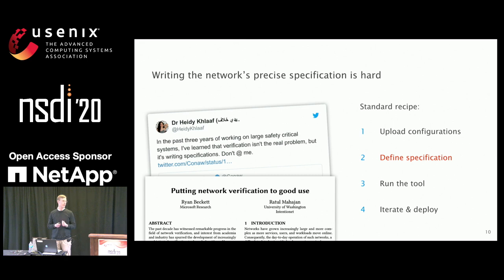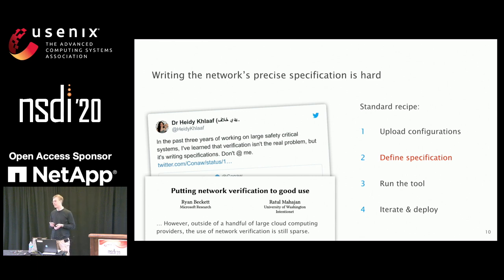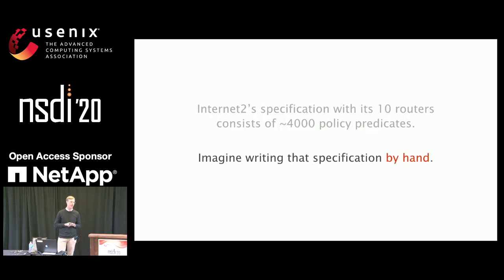There was also a recent paper at HotNets by Ryan Beckett which said that verification tools are not as widely used as one would think. Many cloud operators use them, but the average network operator still doesn't use network verification tools. One reason is that you need to write the specification. To illustrate: we looked at the configuration of Internet2 from May 2015, which only consists of 10 routers, and with our policy language, this specification consists of 4,000 predicates.